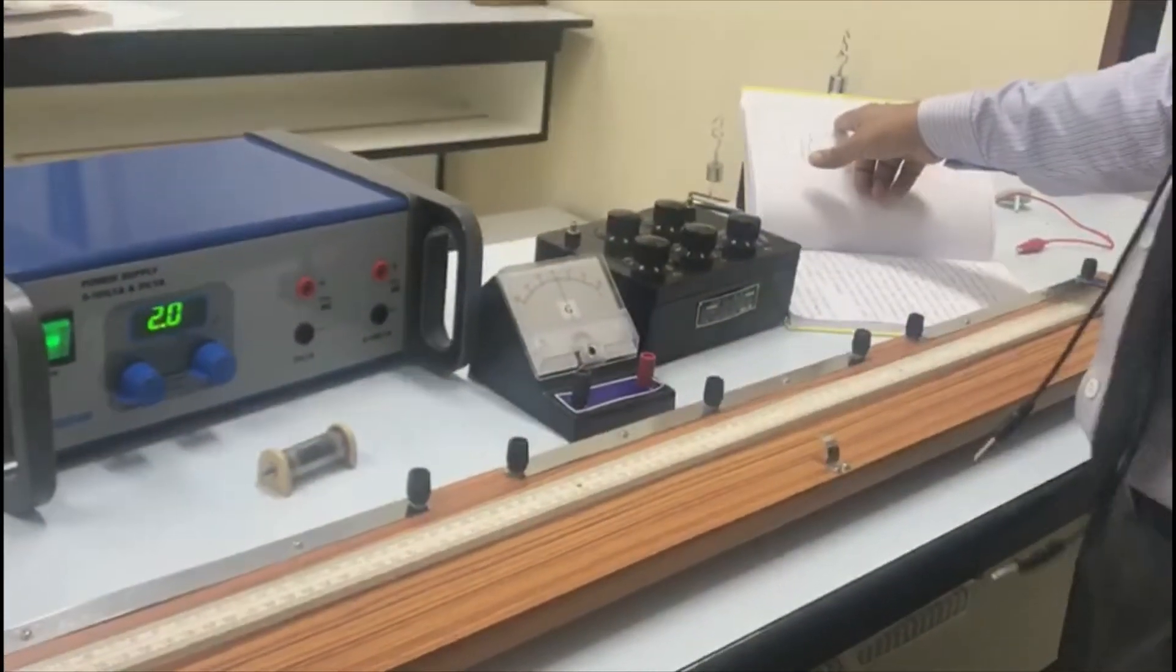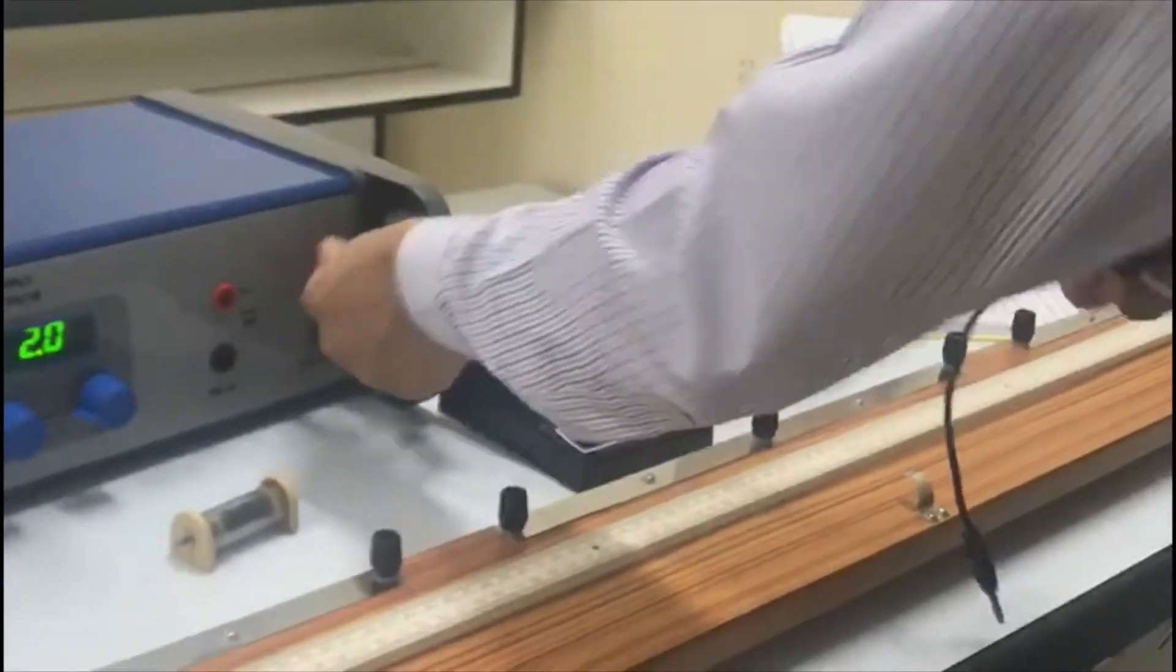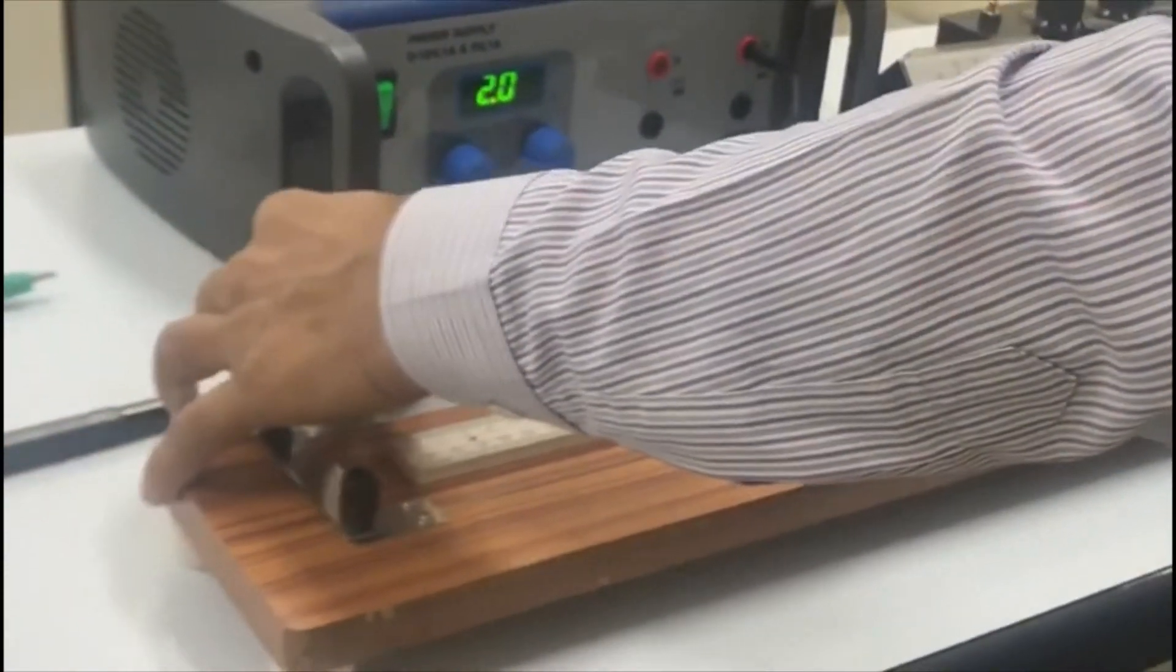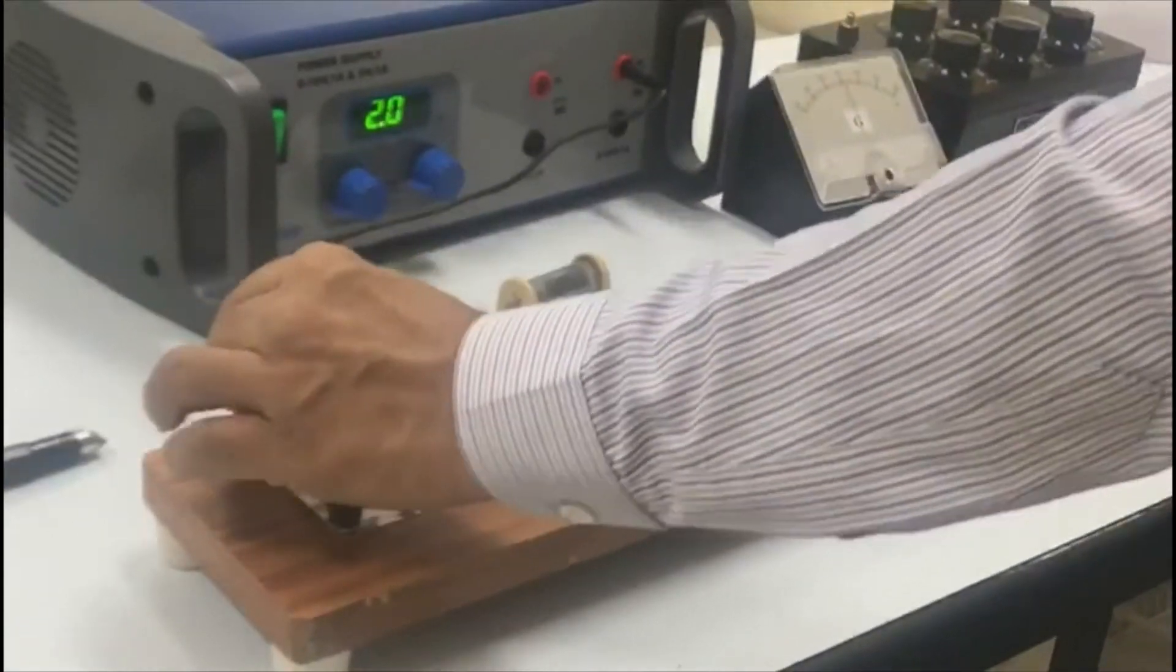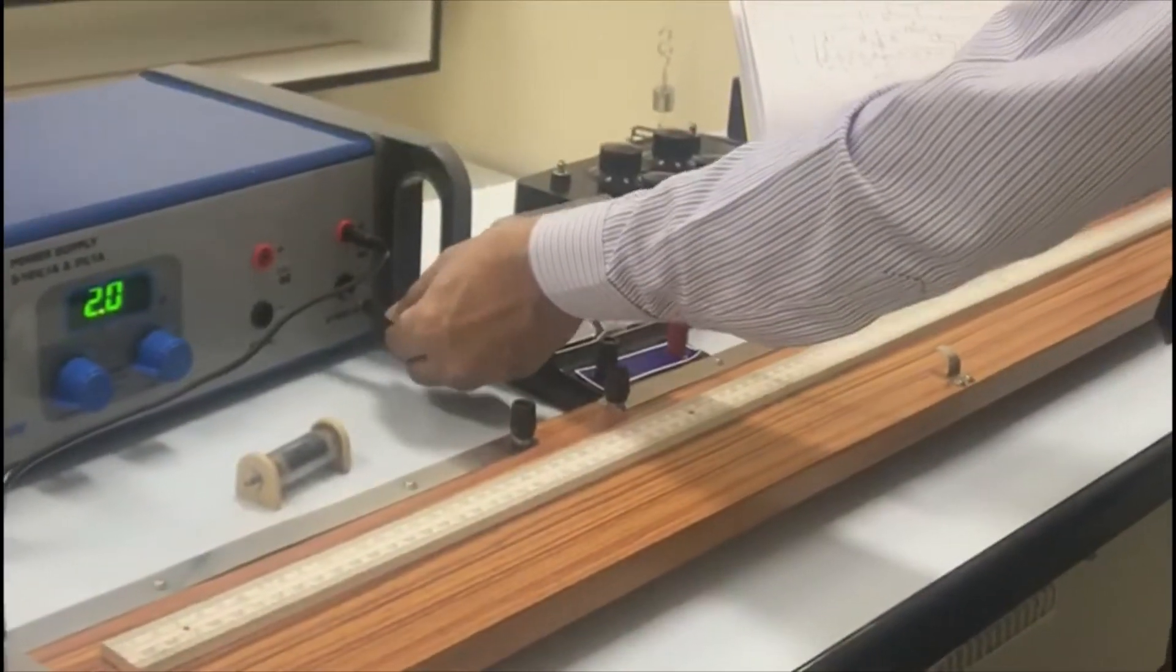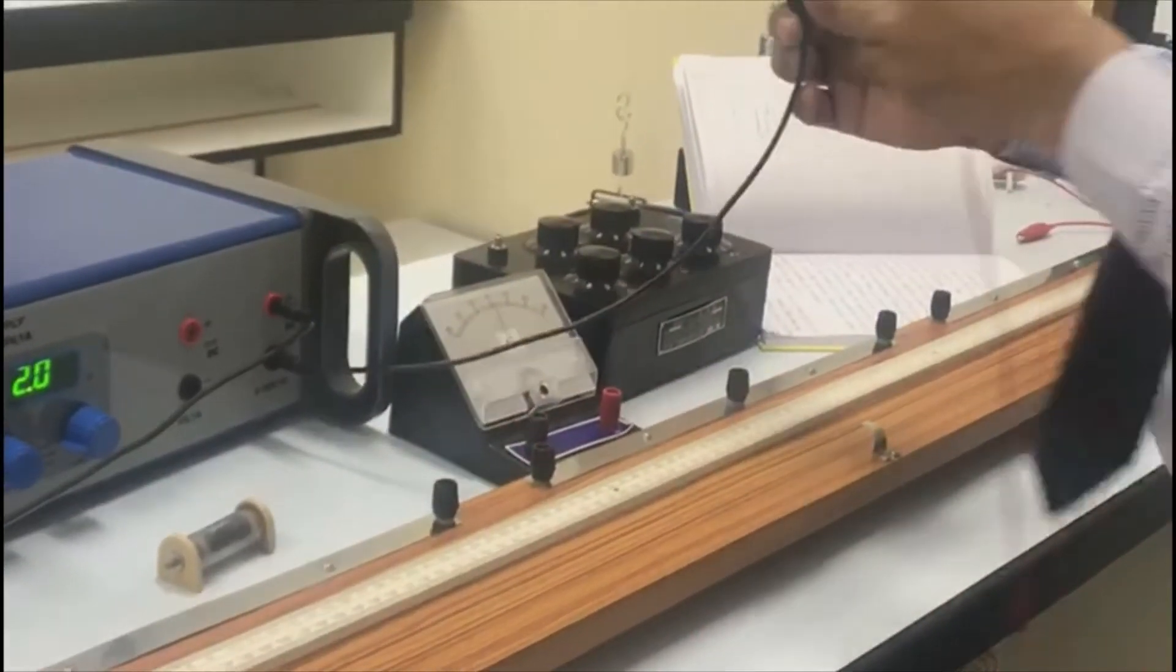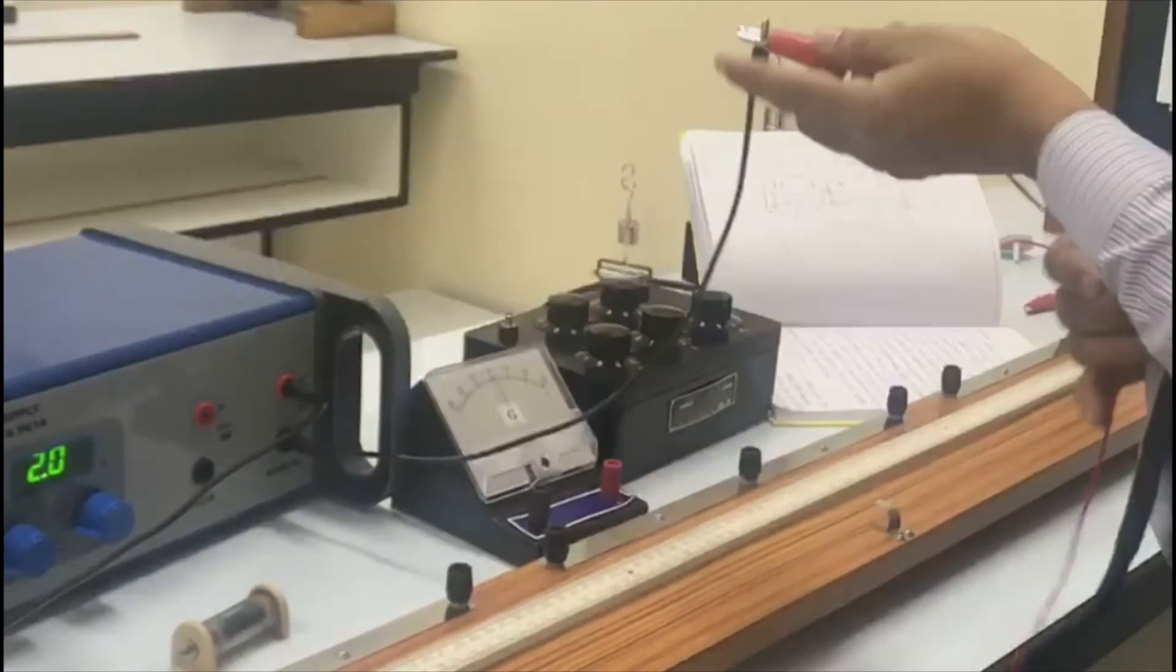Install from positive terminal to the meter bridge. Negative terminal. Go with the rheostat and key. Directly go to the other end.